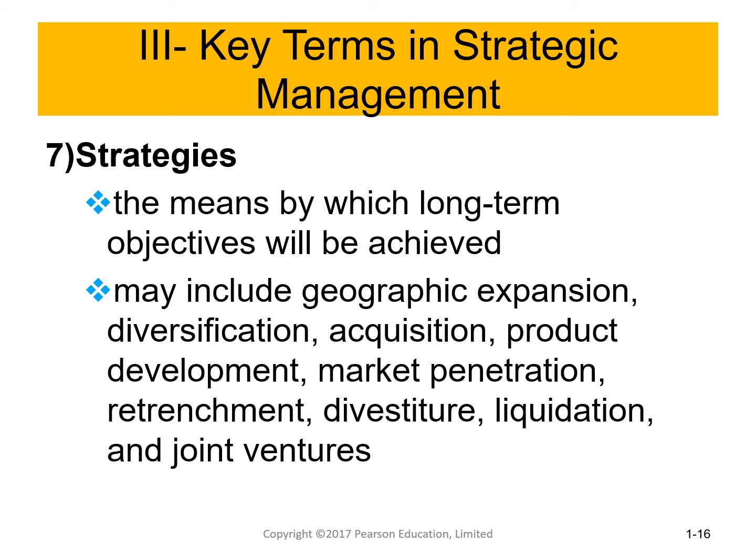Strategies are the means or road map by which long-term objectives will be achieved. A strategy is the way you can reach your objective. Examples include geographic expansion, diversification, acquisition, and product development — chosen according to the company's objectives.